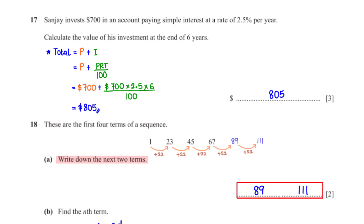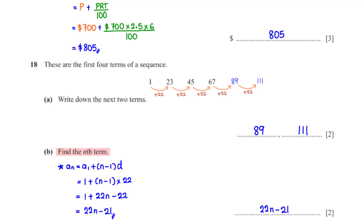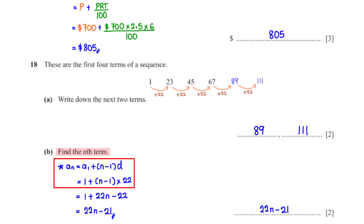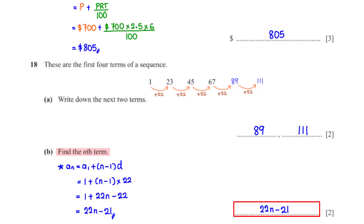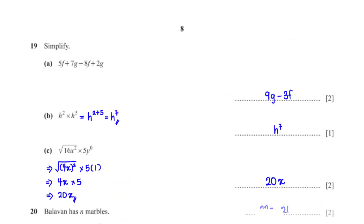Find the nth term. Since the terms have a common difference, we use the formula for arithmetic sequences. The first term a₁ = 1 and d = 22. Expanding: 22n − 22 + 1 = 22n − 21. So the nth term is 22n − 21.